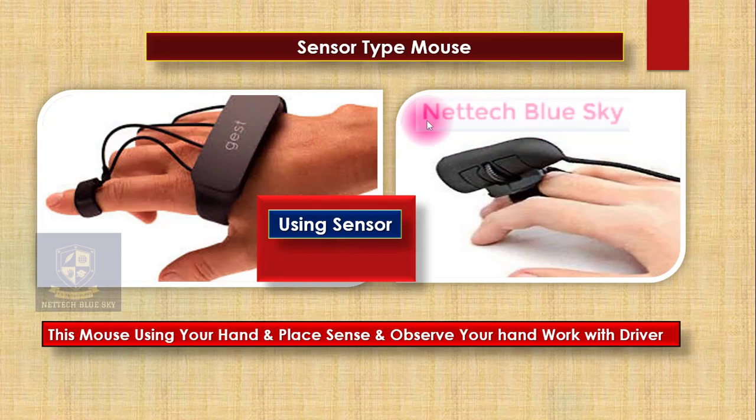The system works automatically because of the driver and the sensor type mouse hardware — both working with your computer hardware. The sensor type senses your computer and you can move to any side — left side, right side, any side — with your finger moving.